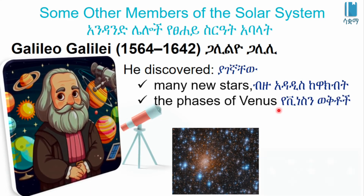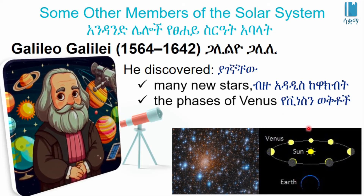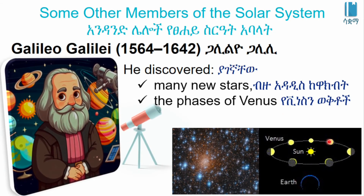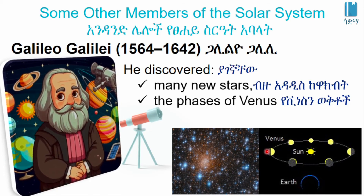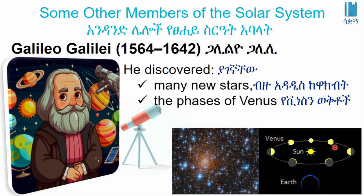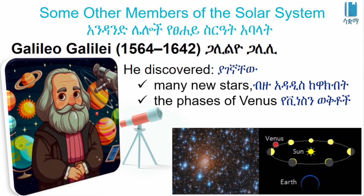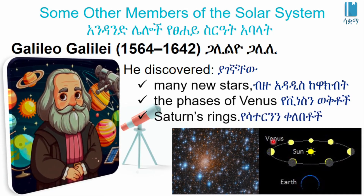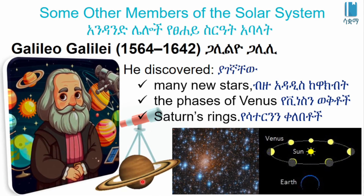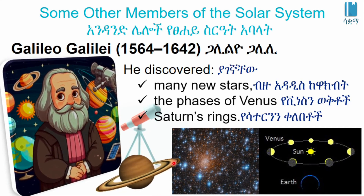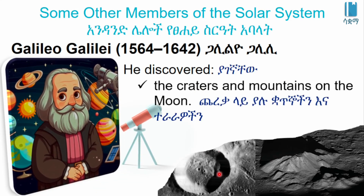Galileo also observed the phases of Venus and the rings of Saturn. He also discovered craters and mountains on the Moon.